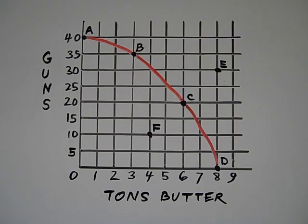In front of you on the screen, you see a graph. What this graph represents is what an imaginary country can produce. This imaginary country can only produce two things: guns and butter.